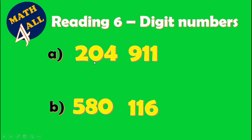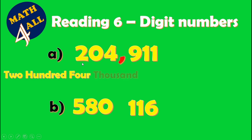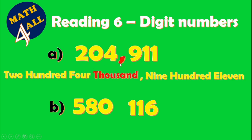Here we have a six-digit number. Count from the right side three digits and put a comma. This comma is called 'thousand.' Start from the left side: we have two hundred four thousand nine hundred eleven. Again: two hundred four thousand nine hundred eleven.